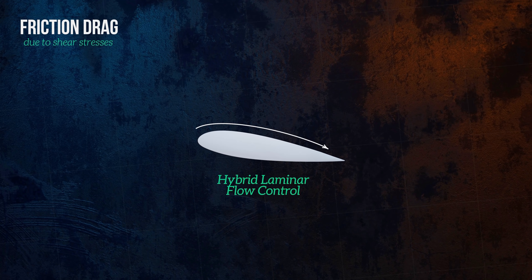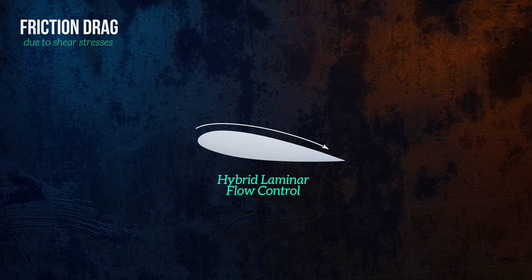Techniques like hybrid laminar flow control have had some success. It involves using suction to pull air through small holes into the wing, which delays the onset of turbulence.